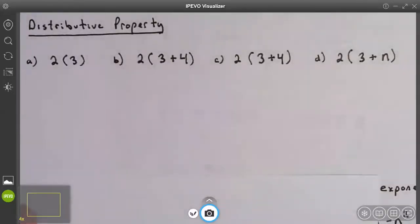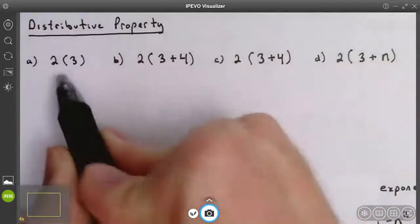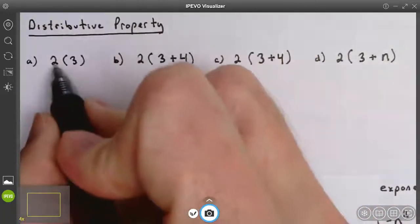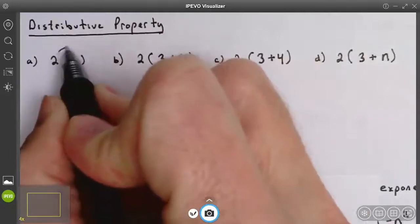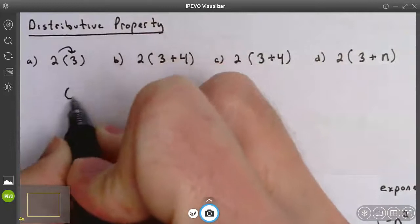This video is on using the distributive property to simplify expressions. When you have a number beside parentheses, it implies that you should multiply. You are distributing the 2 to the 3. 2 times 3 is 6.